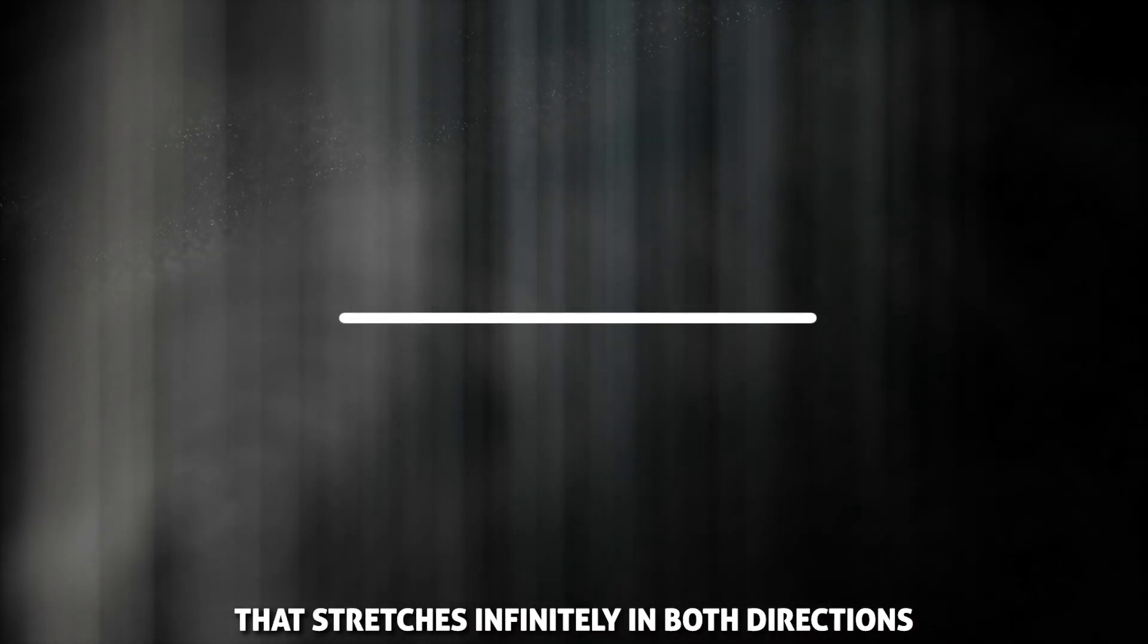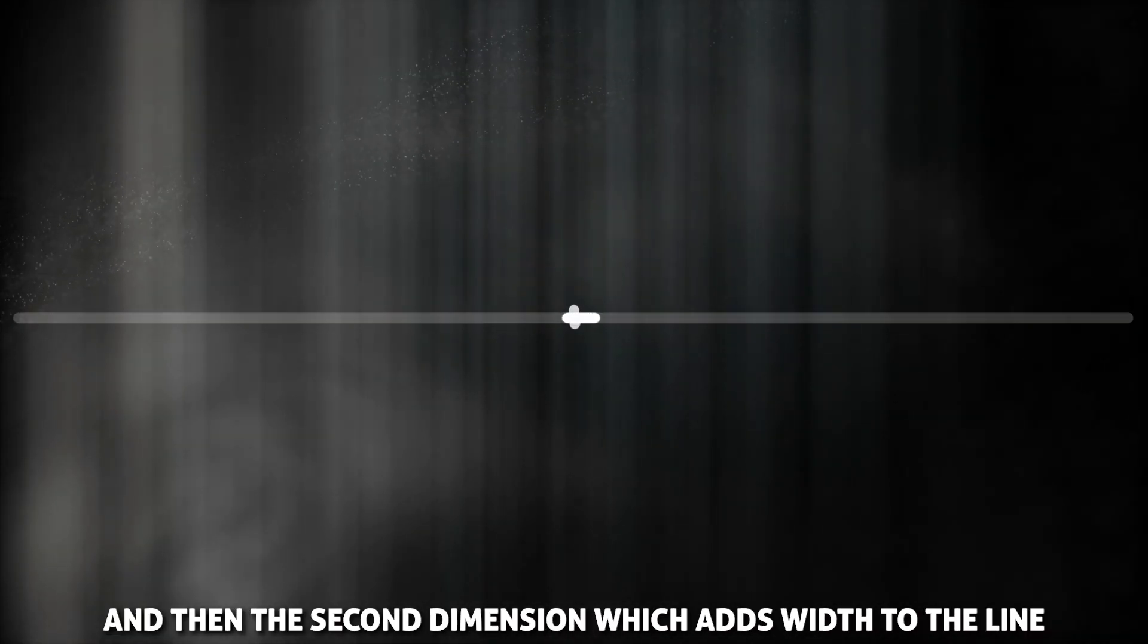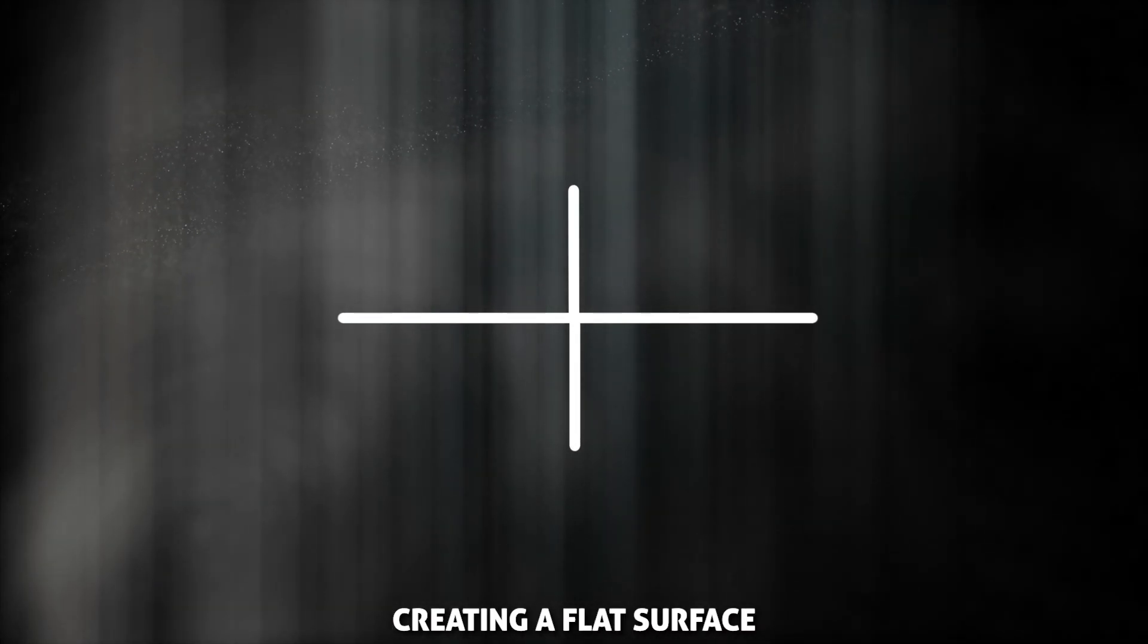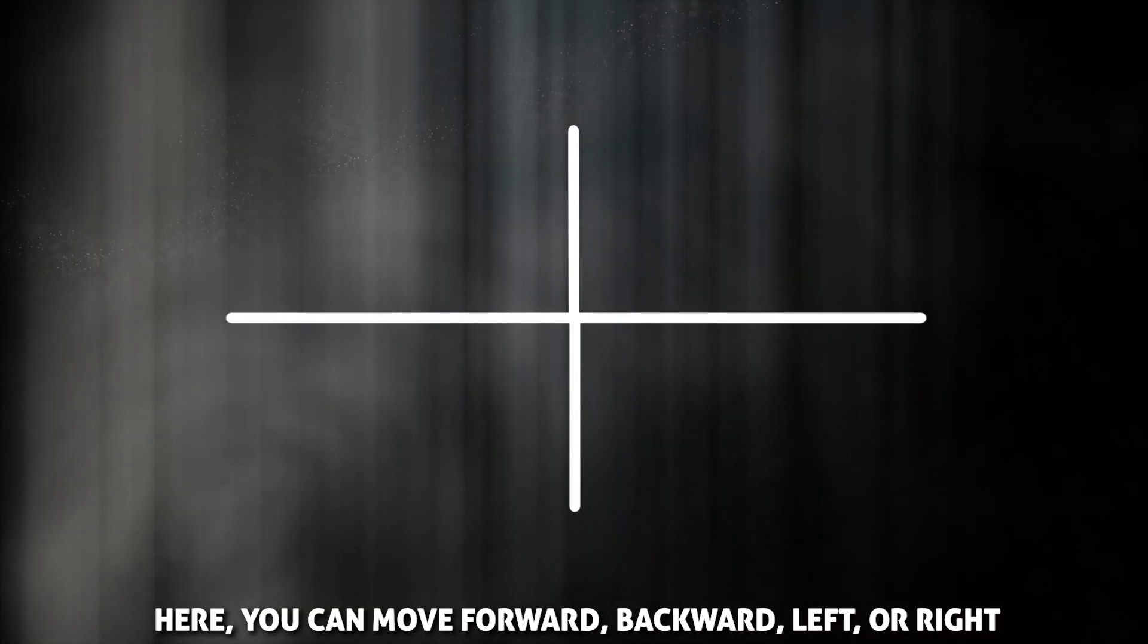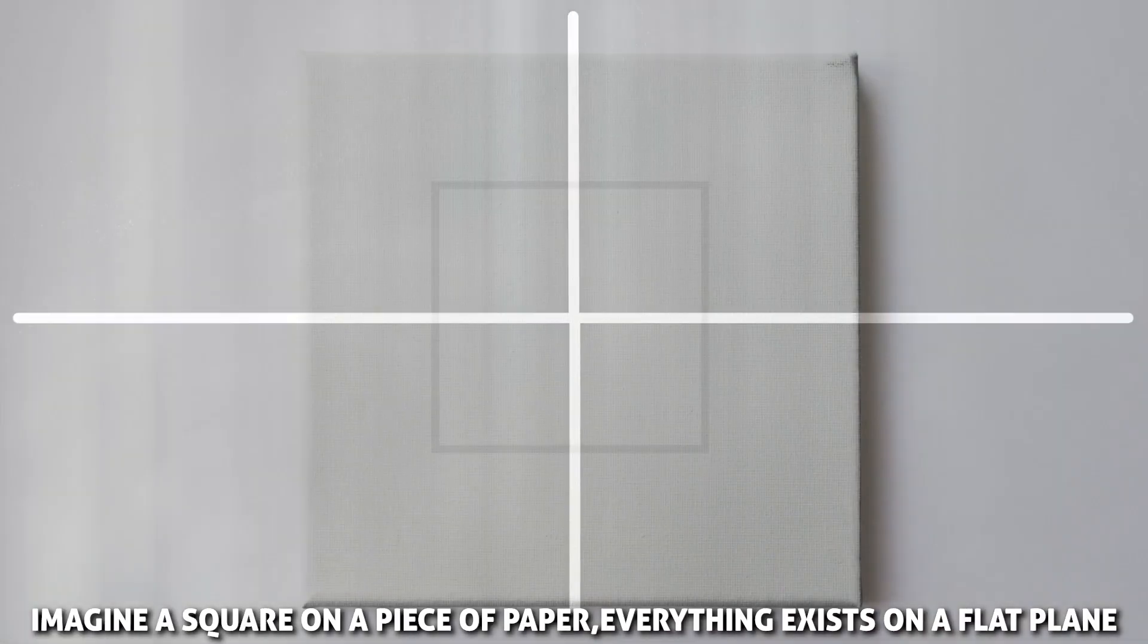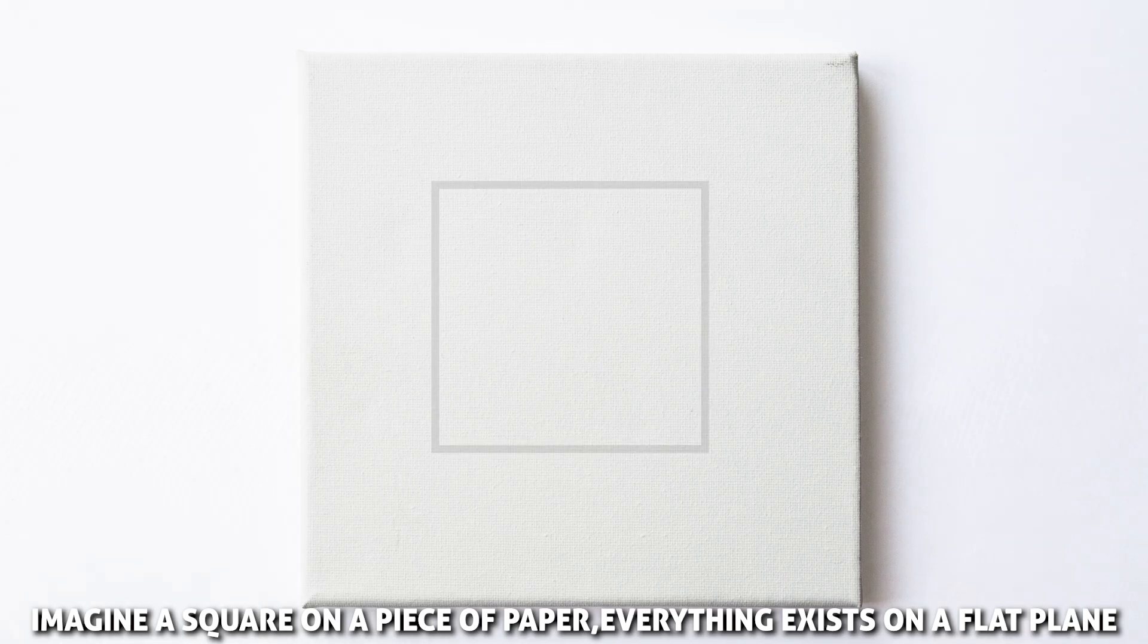The first dimension. In the first dimension, we have only length, a single line that stretches infinitely in both directions. Think of it as a ruler with no width or depth, just a straight path from one point to another. And then the second dimension, which adds width to the line, creating a flat surface. Here, you can move forward, backward, left, or right. Imagine a square on a piece of paper. Everything exists on a flat plane.